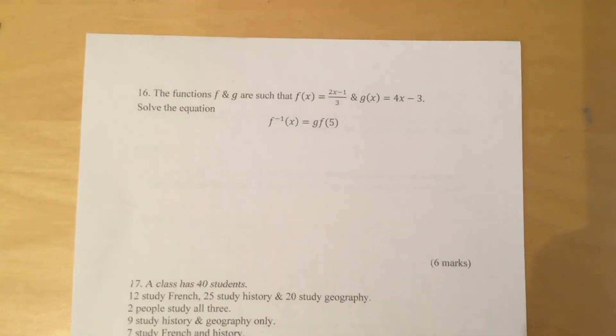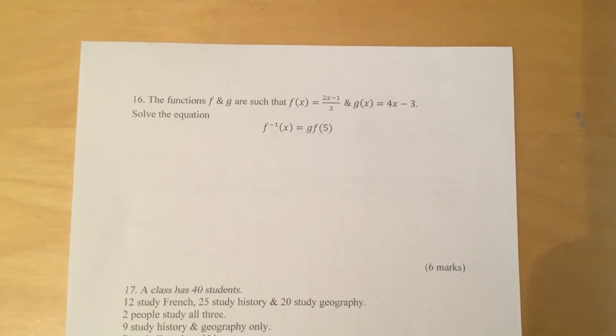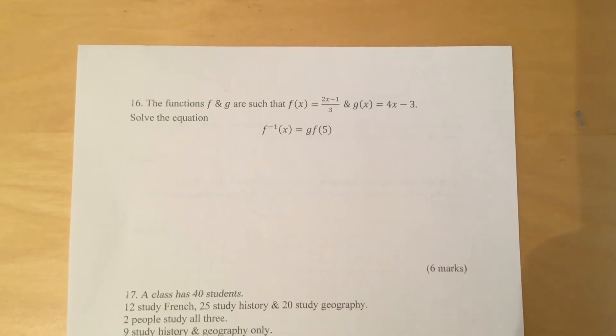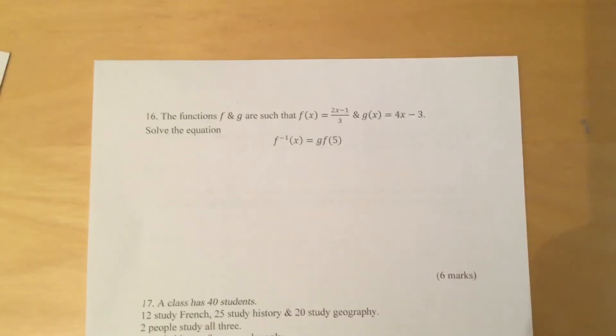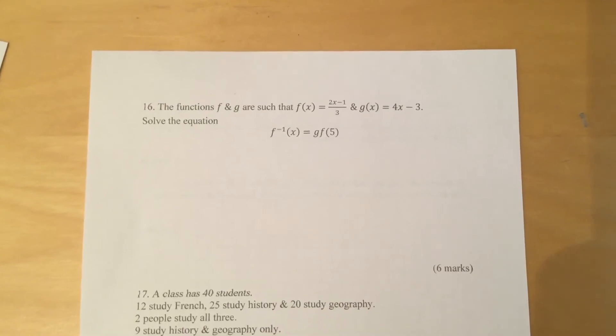Question 16. The functions F and G are such that F of X equals 2x minus 1 over 3, and G of X equals 4x minus 3. Solve the equation F inverse of X equals G of F of 5.